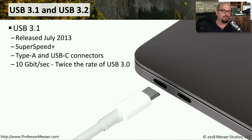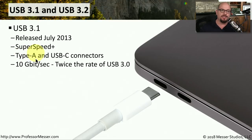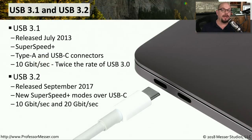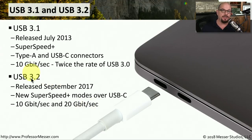USB version 3.1 was released in July of 2013, and this brought super speed plus, which allowed higher speed communication over type A and a new USB-C connector. This allowed for 10 gigabit per second speed, which was twice the available throughput as USB 3.0. USB 3.2 was released in September of 2017, and this brought new data modes using the USB-C connection, with speeds that went all the way up to 20 gigabits per second.